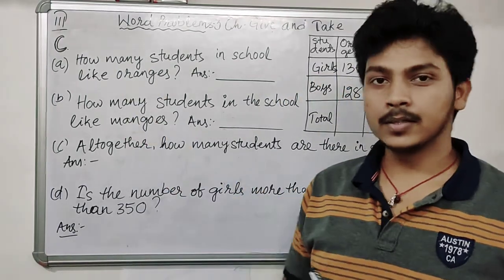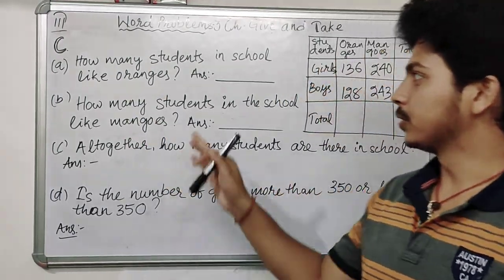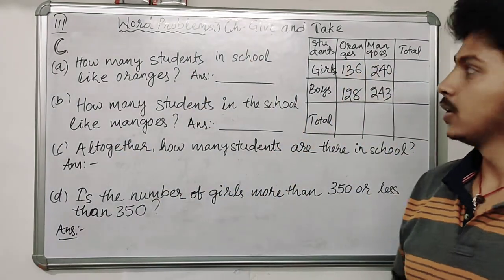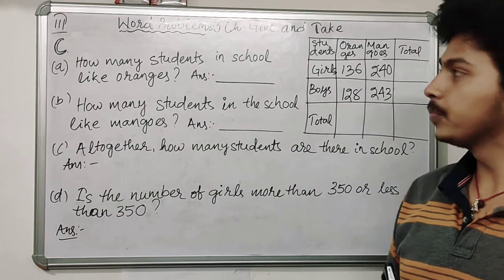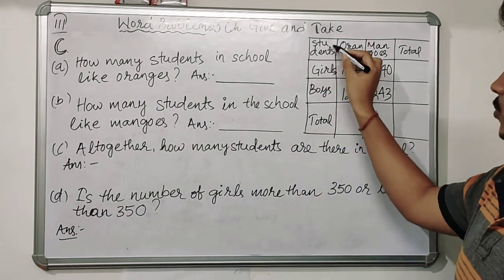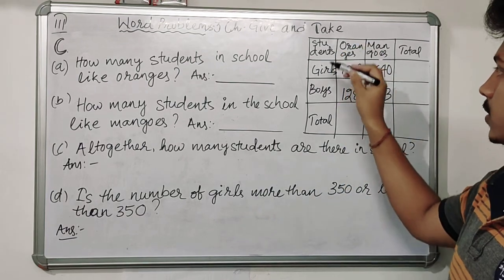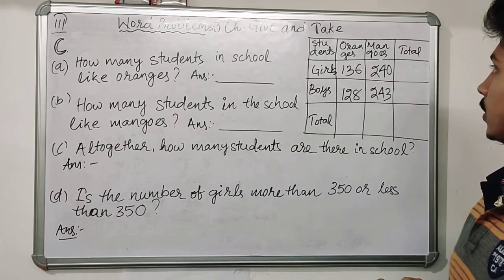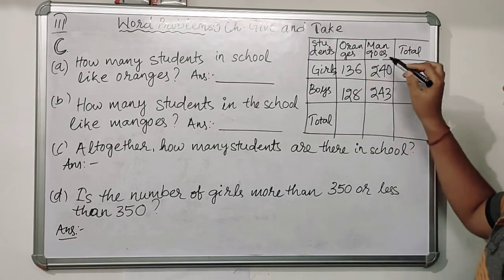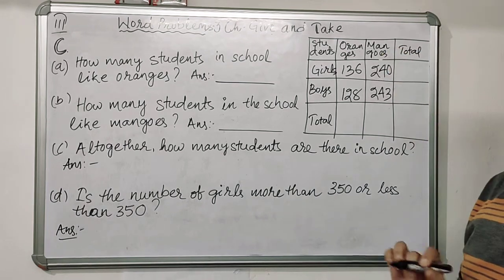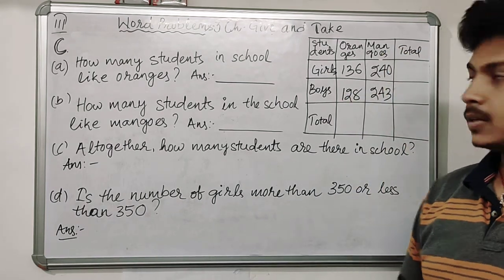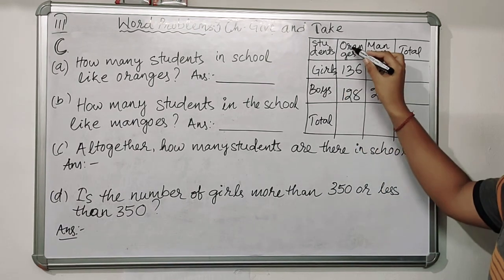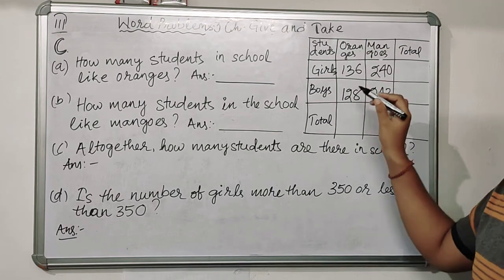So dear students, this is question number C. There are some questions and a table. Let us first understand this table — it shows the number of students, the type of students: girls and boys, and whether the students like oranges or like mangoes. These are separately given, so first let's fill out the table.